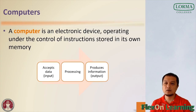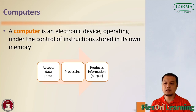A computer is an electronic device operating under the control of instructions stored in its memory. It can accept data — that's your input — process the data according to specified rules, produce information — that's your output — and store the information for future use. A computer contains electronic and mechanical components known as hardware. Electronic components in the computer process data using instructions, which are the steps that tell the computer how to perform a particular task. These collections of related instructions organized for a common purpose are referred to as programs. Using software, you can complete a variety of activities such as search for information, type a paper, balance a budget, create a presentation or play games.